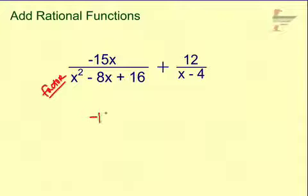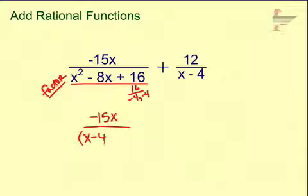So this top one, we have a negative 15x on the top. We want to rewrite this in factored form. So we take factors of 16 that add up to a negative 8 and we get a negative 4 and a negative 4. So I'm going to rewrite this in factored form. And then plus we have 12 over x minus 4, which is already factored.